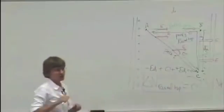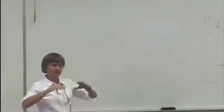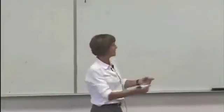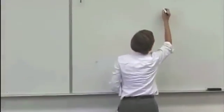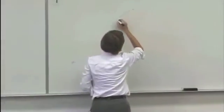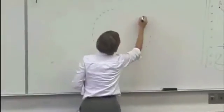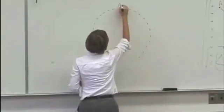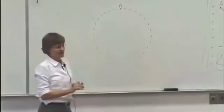Imagine the following situation. We have a region of space where there's an electric field. We want to consider a circular path that starts at A and comes back to A.